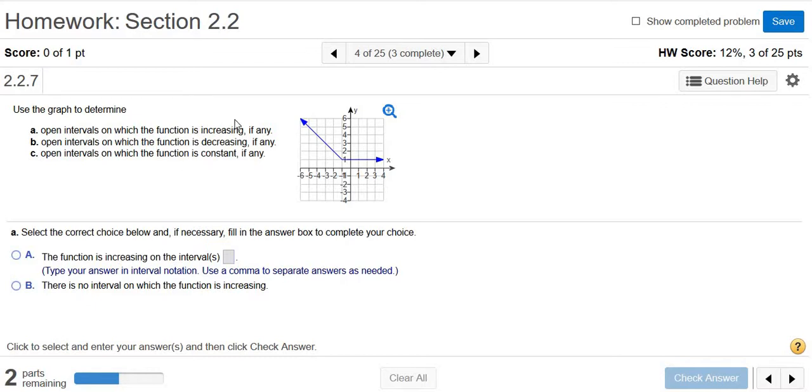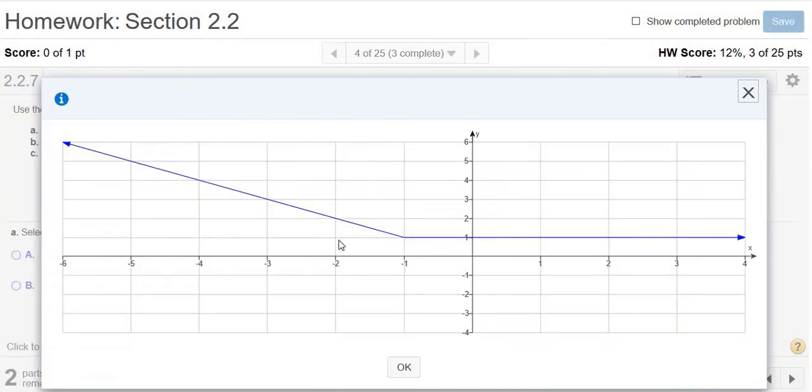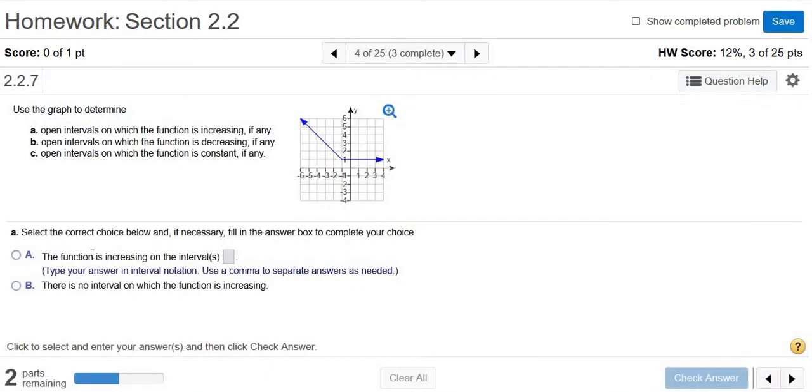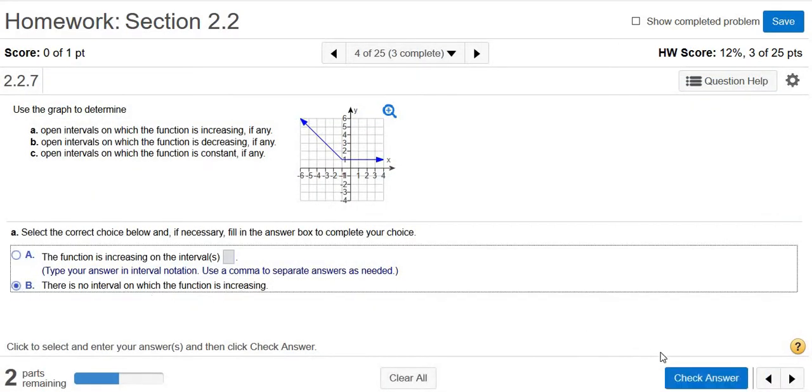Part A wants to know if it's increasing. Increasing means the graph is going up. If you click on the little magnifying glass, you'll notice it's never going up. Instead, it's actually decreasing over here, and it's constant here because it's not changing.